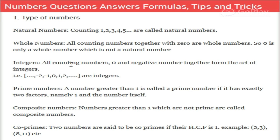If we also include negative numbers like minus one, minus two, minus three, minus four, and so on, then these become integers. Integers are all negative numbers, zero, and all positive numbers.